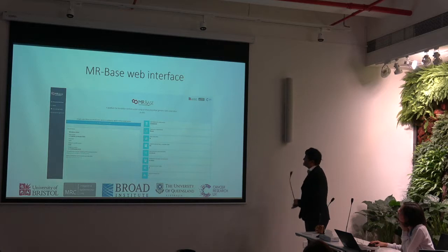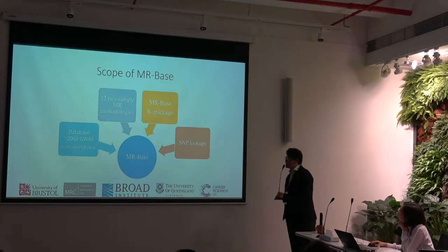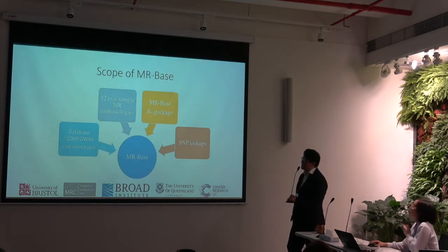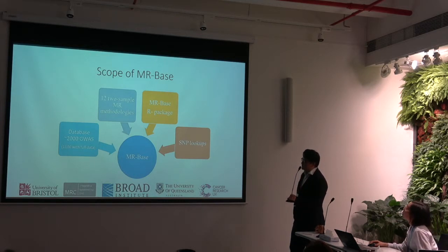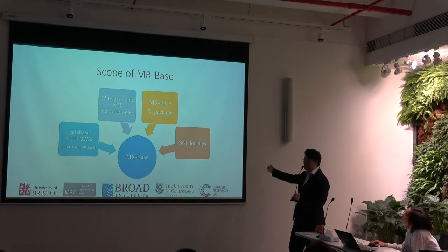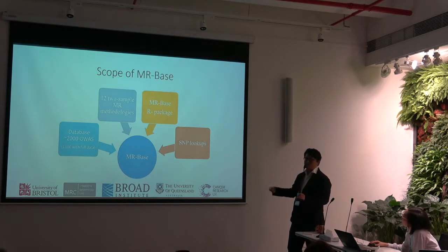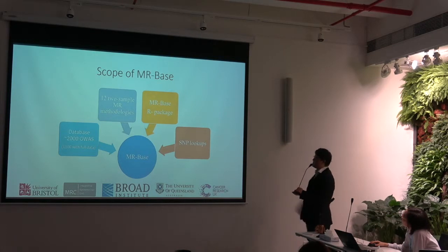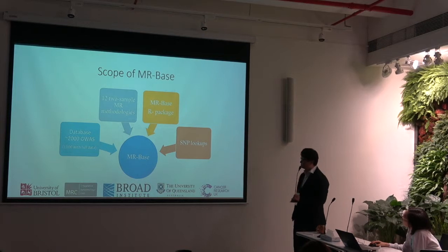In MRBase, we provide 10 different MR methods and sensitivity analyses, and generate a reference report with a lot of nice plots. We have about 2,000 different GWASes and 12 different methods. We also have a SNP lookup: if you have a SNP and want to look up its function across 2,000 different GWASes, you can go to our website and do that lookup.